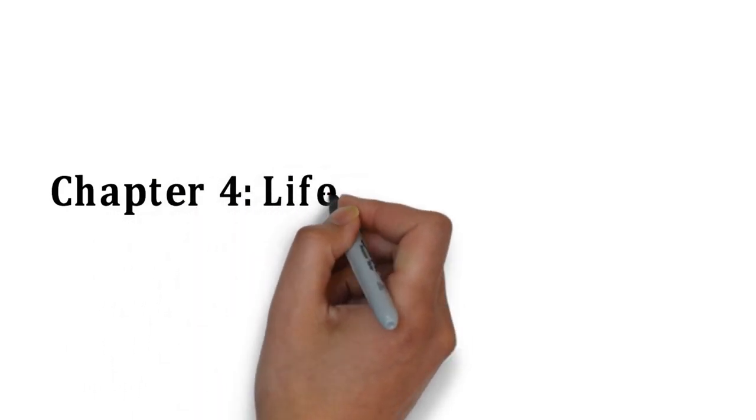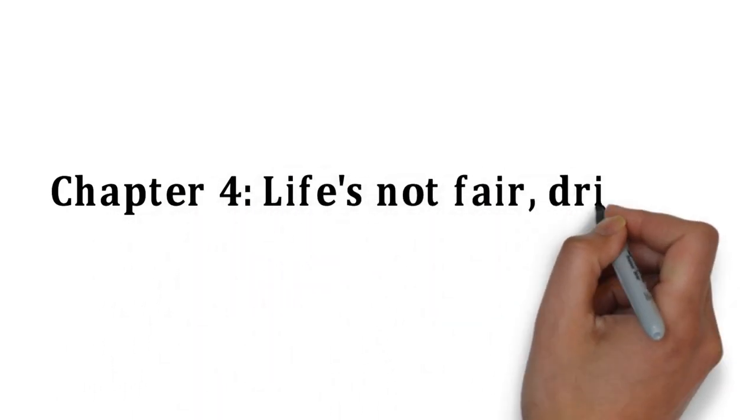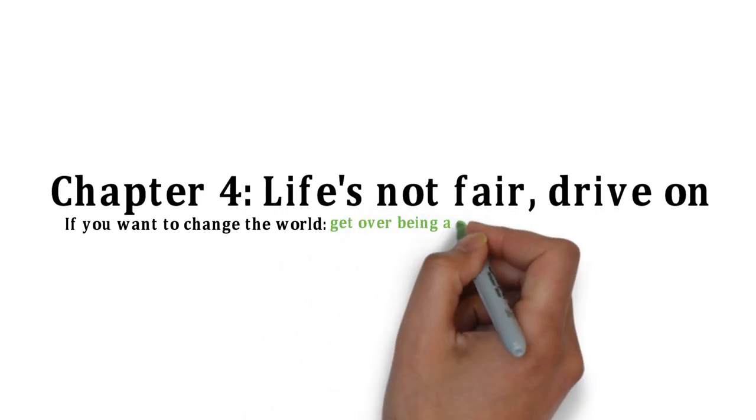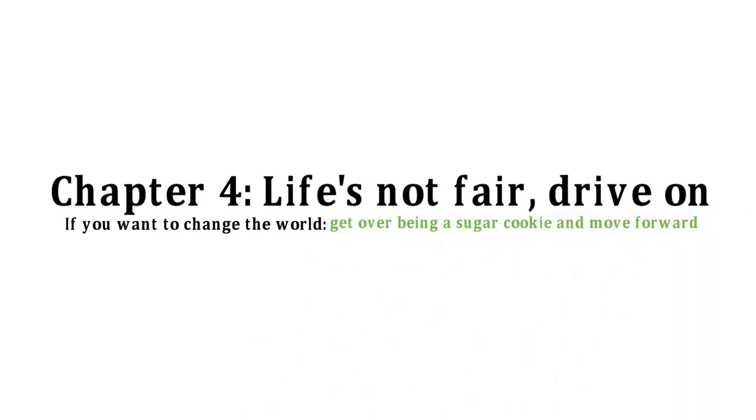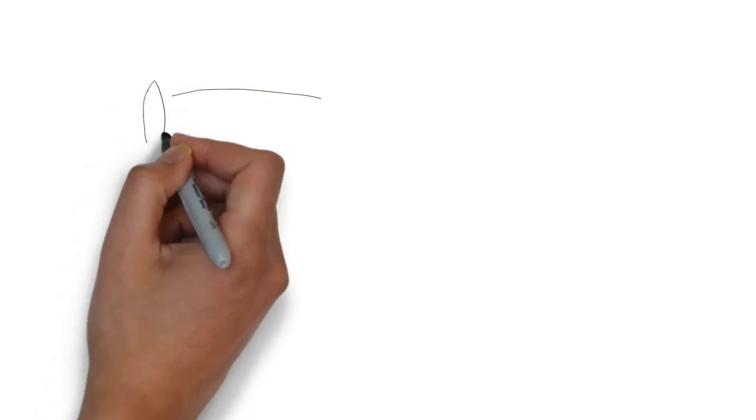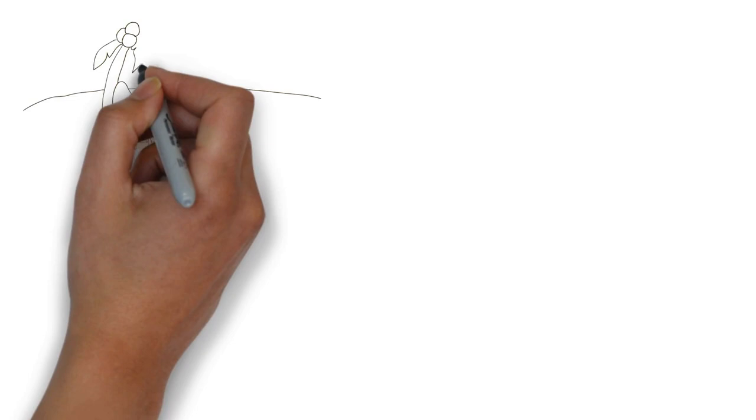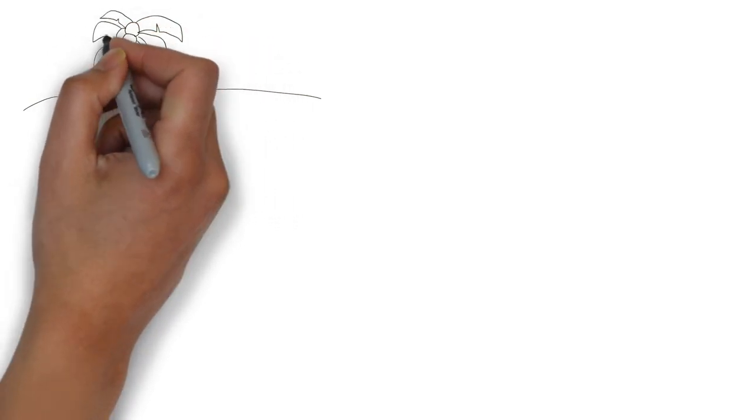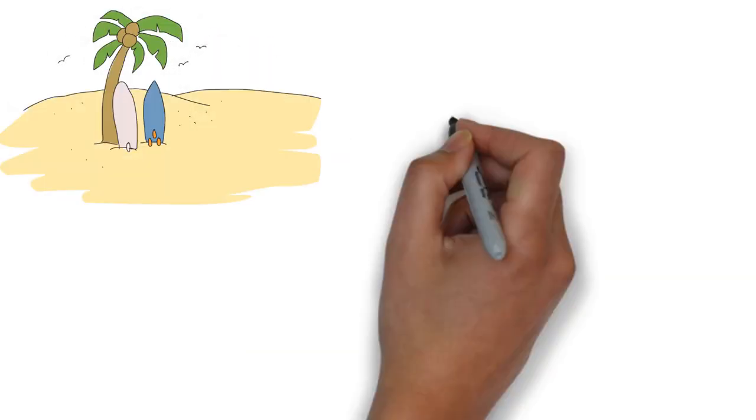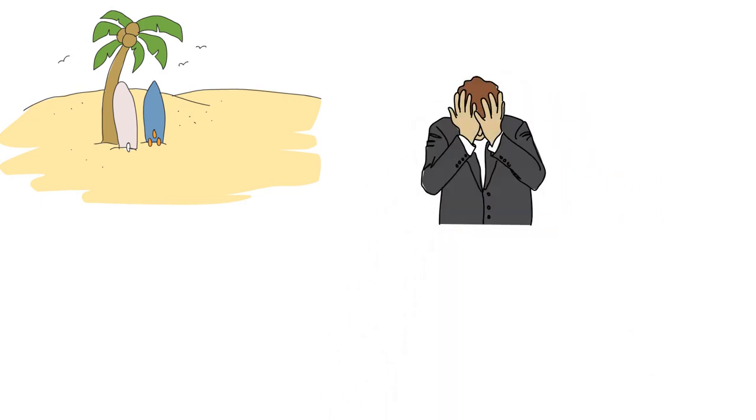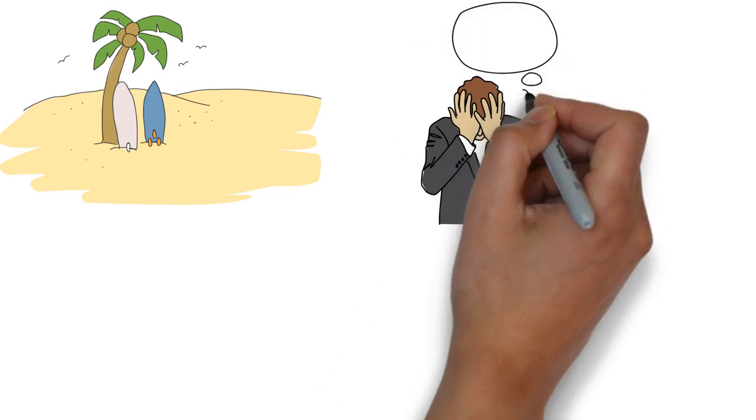Chapter 4: Life's Not Fair, Drive On. If you want to change the world, get over being a sugar cookie and move forward. When Billy messed up in SEAL training, his punishment was to jump in the surf zone, roll around in the sand, and make himself a sugar cookie. The act of becoming a sugar cookie was completely indiscriminate. There was no rhyme or reason.